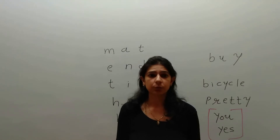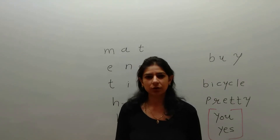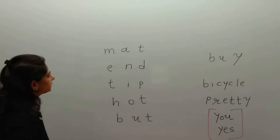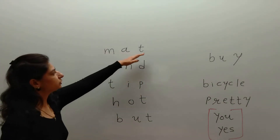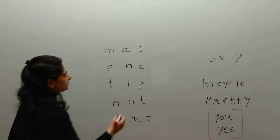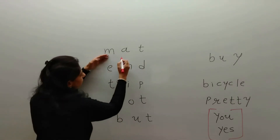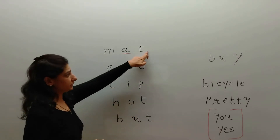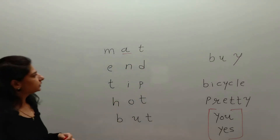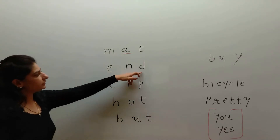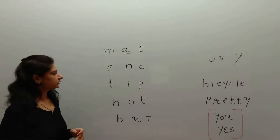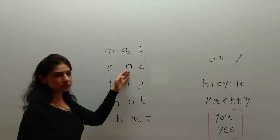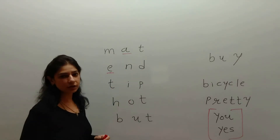All English words have vowels — maybe one or many vowels. For example, the word M-A-T, 'mat': M is a consonant, A is a vowel, and T is a consonant. Another word: E-N-D, 'end': E is a vowel, N is a consonant, and D is a consonant.